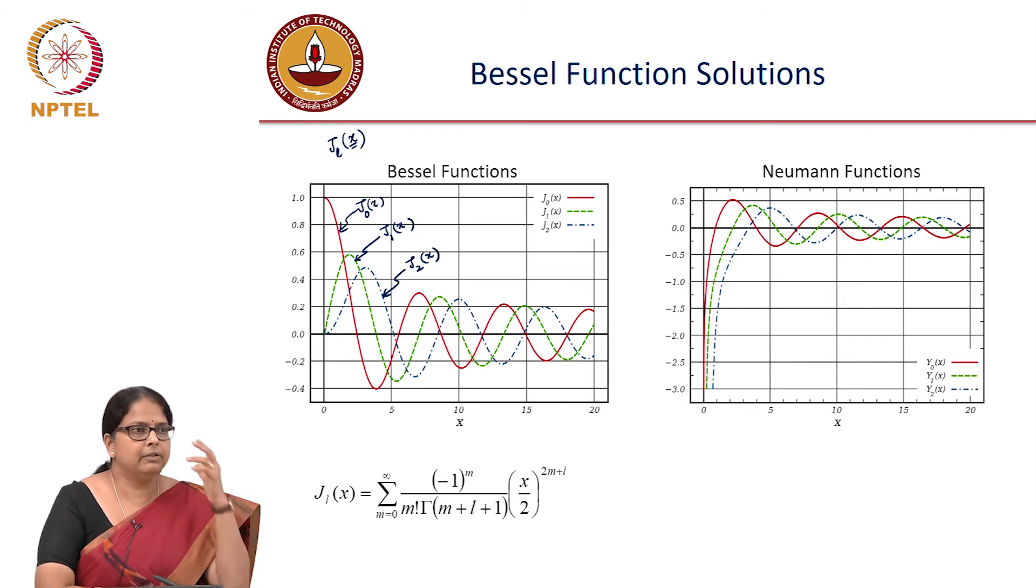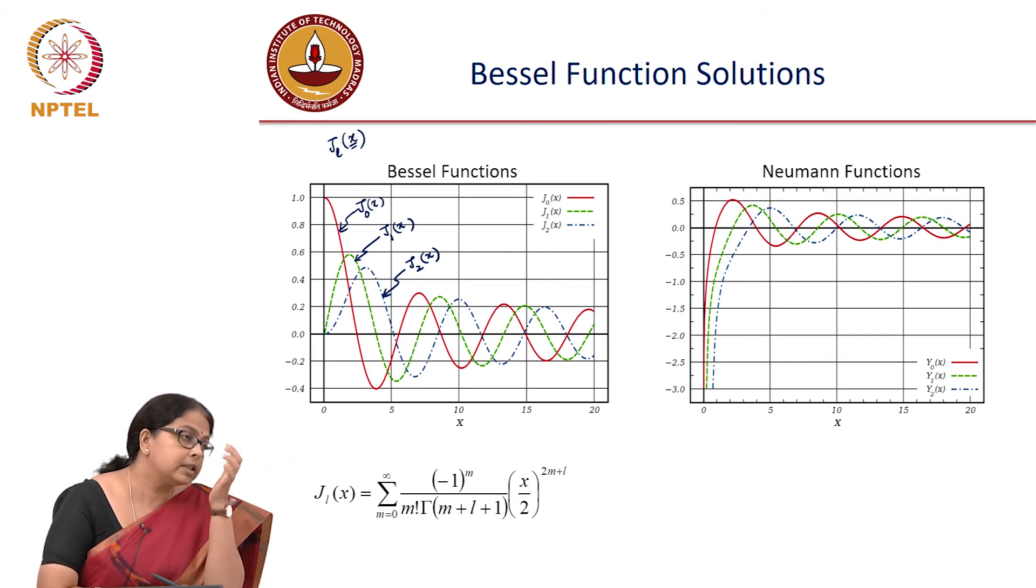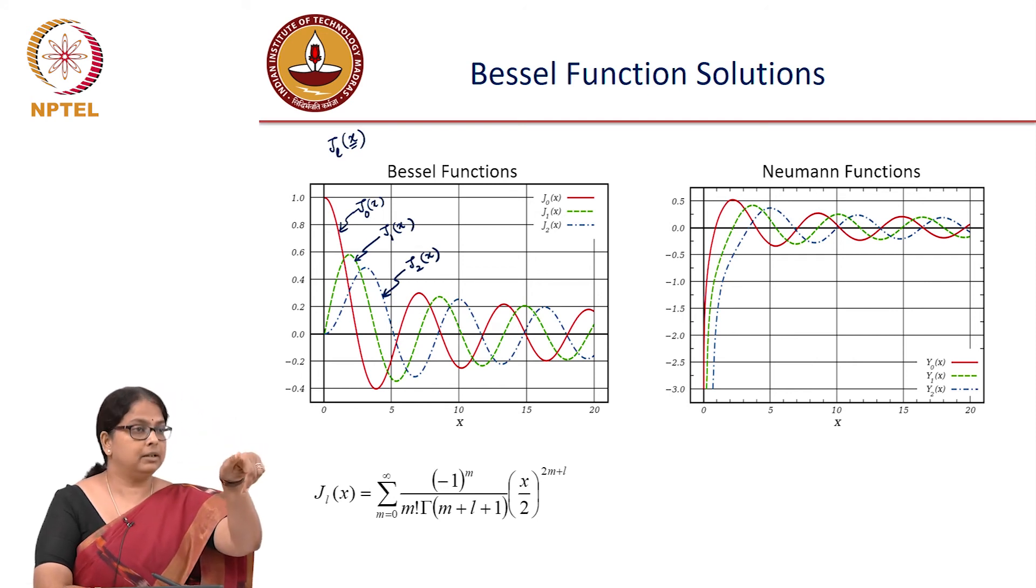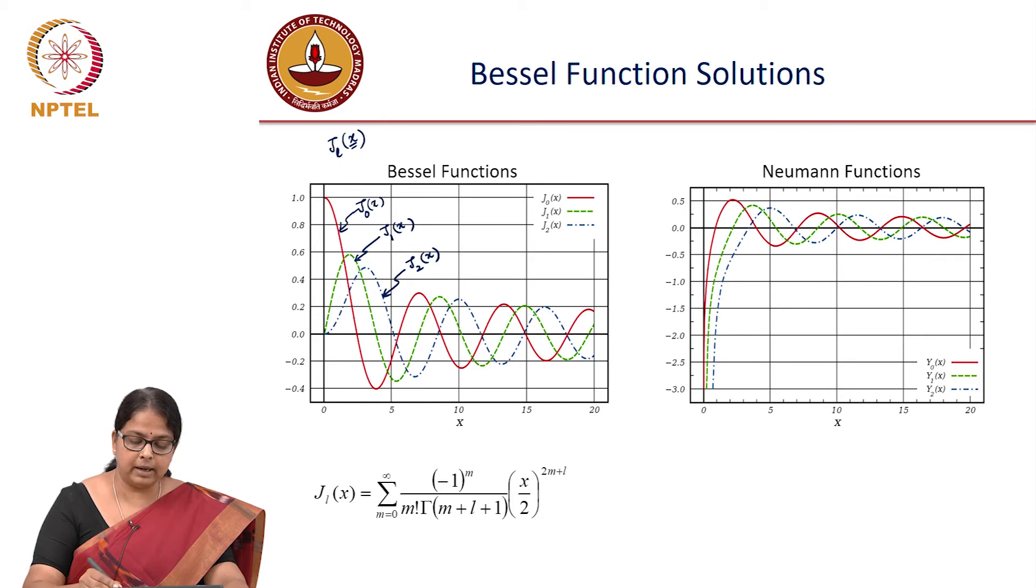Which means for different values of l, let us try to keep physically connecting with what we have learned. What are different values of l corresponding to? The different azimuthal possibilities. So, for different azimuthal modes, for each azimuthal mode, I could have j naught x, I could have for l equal to 1, it is j1 x, l equal to 2, it could be j2 x. These are the possible family of solutions.